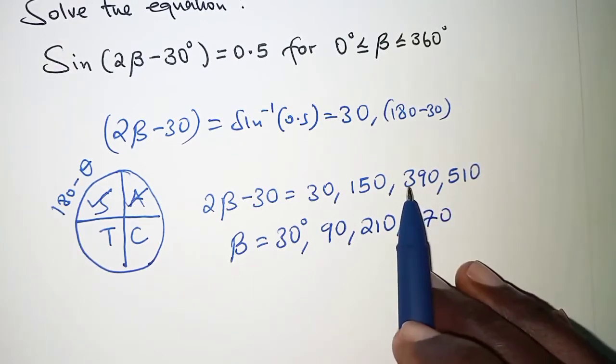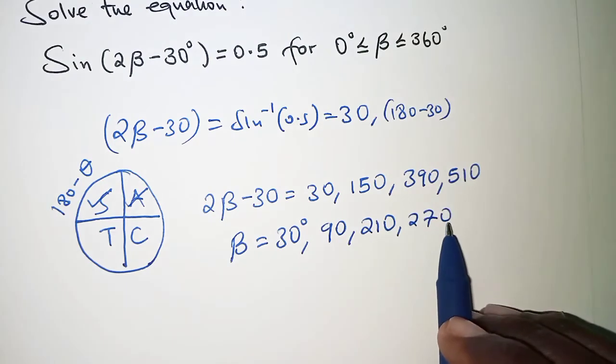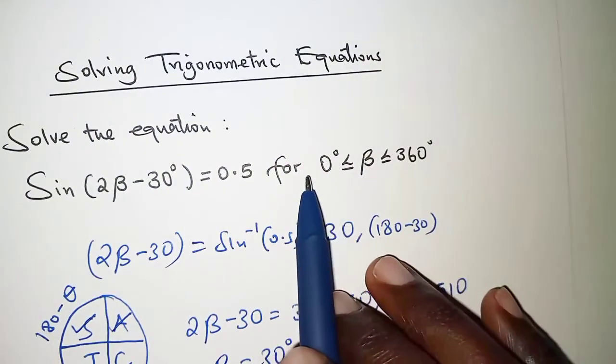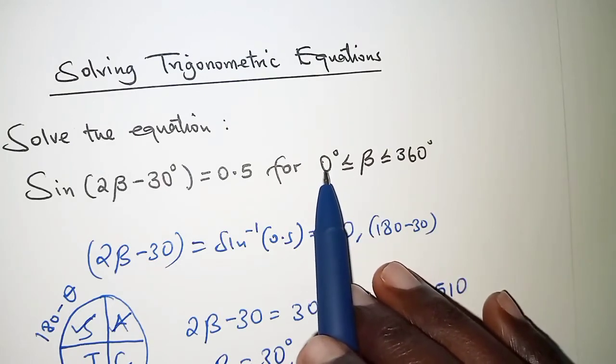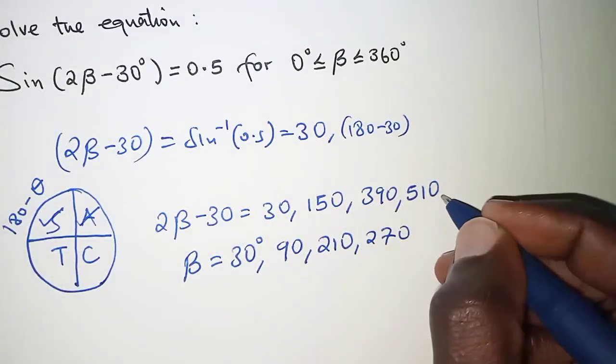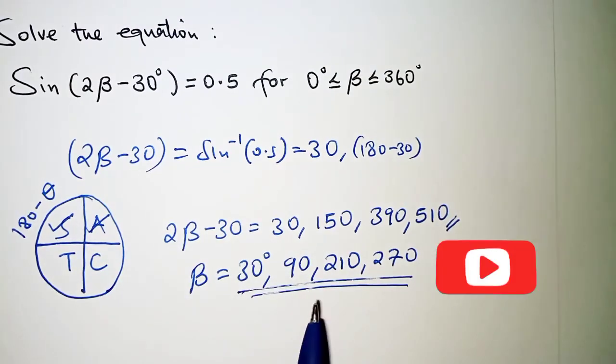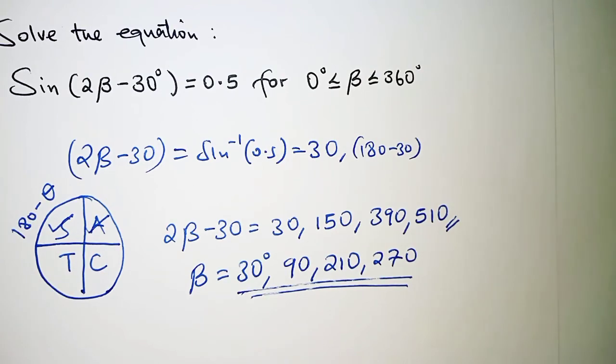If we happen to add 360 to these ones too, the values that we'll get will be beyond 360. But remember we are told that the values of beta should be within the range 0 and 360. So that is why I stopped at 510. And that is it for this question. Thank you for watching. I hope to see you in the next video.